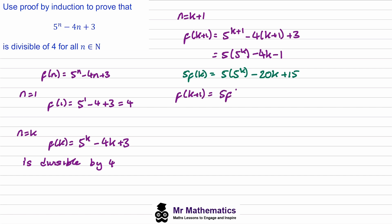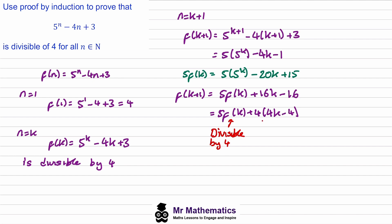We get five f of k. But we have negative twenty k and we need negative four k, so we need to add sixteen k. And we have a constant of fifteen but need negative one, so we take away sixteen. We can factor four out of sixteen k minus sixteen, giving five f of k plus four lots of four k minus four. We've assumed f of k is divisible by four, and four times four k minus four is clearly divisible by four. So we've proven that f of k plus one is divisible by four.